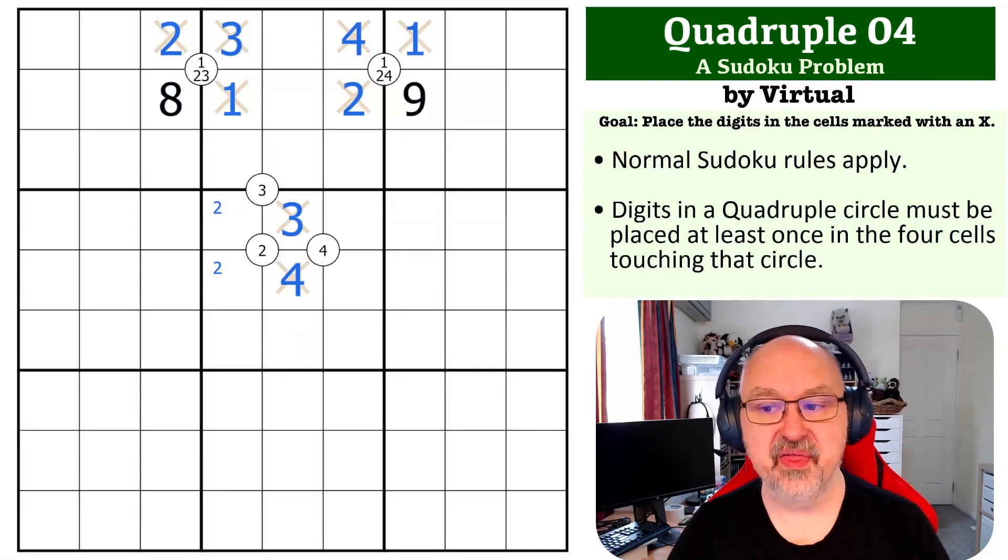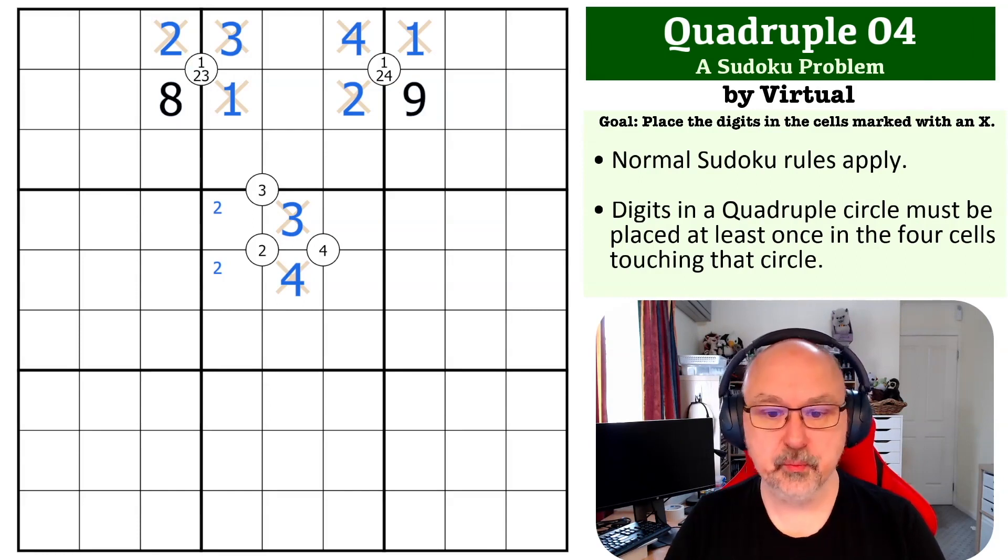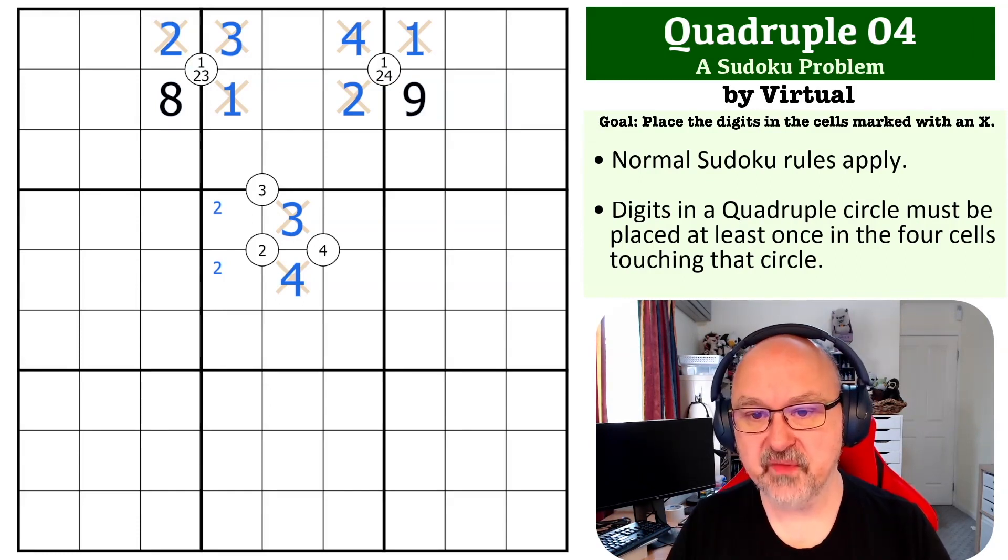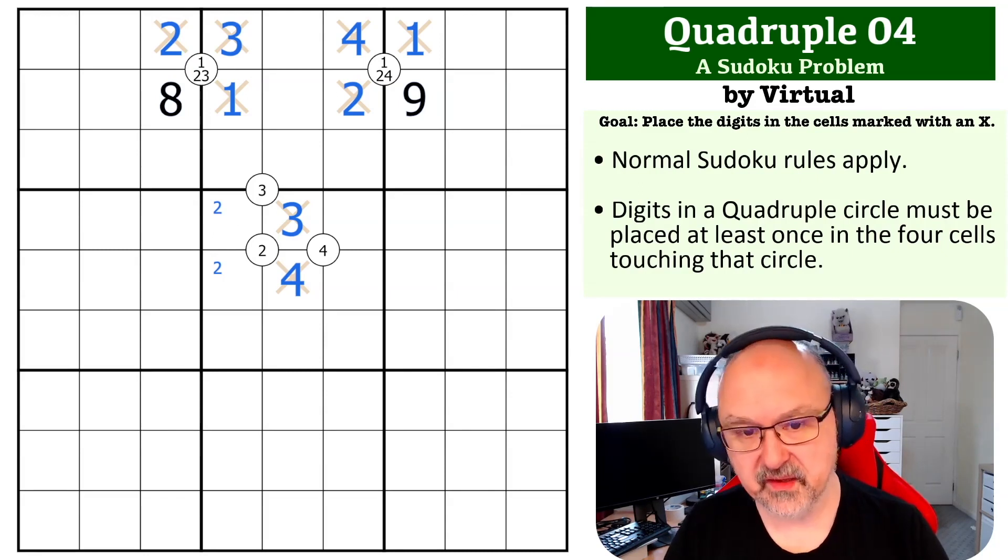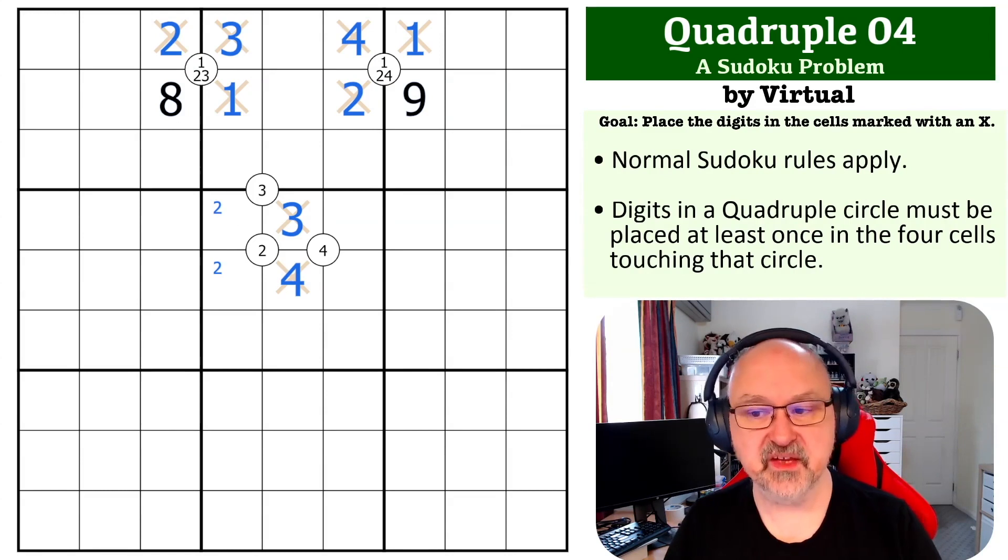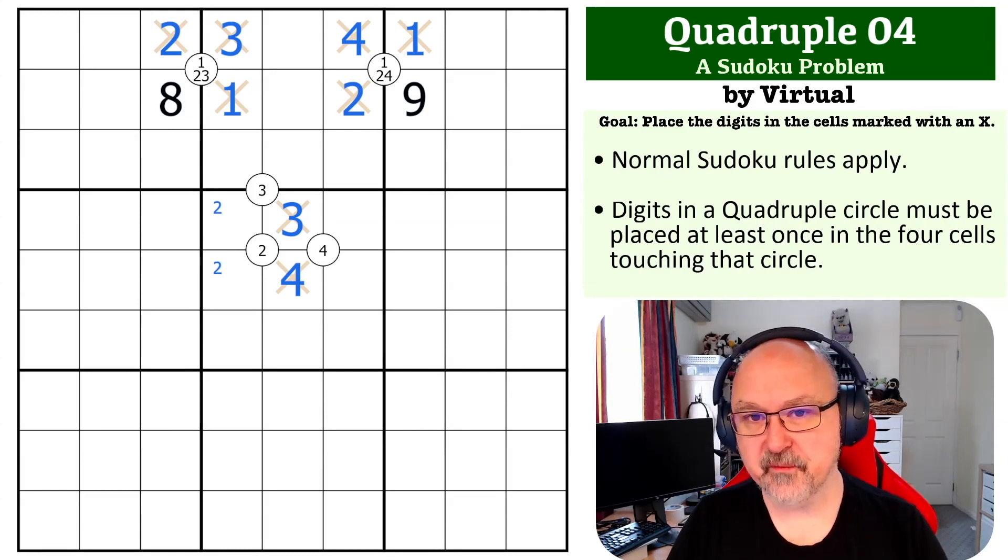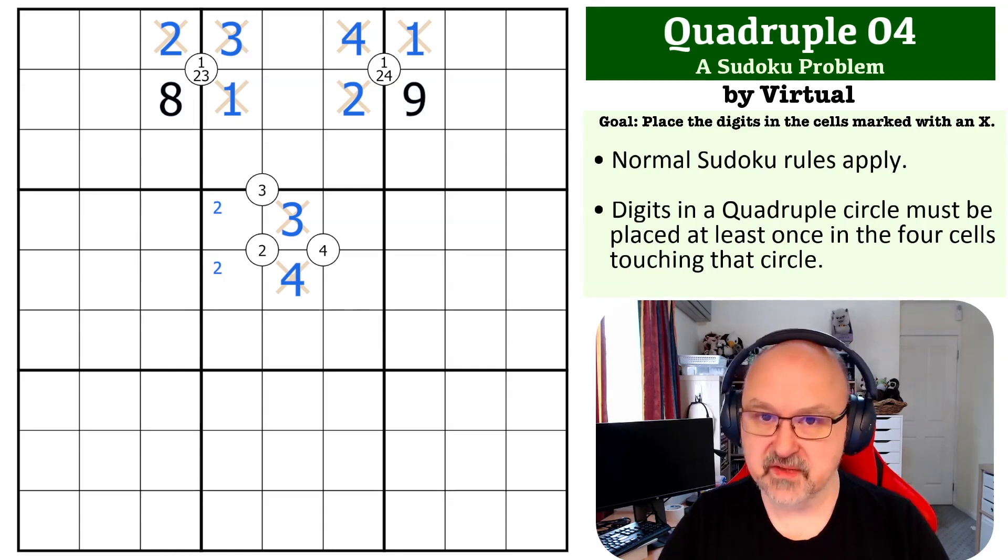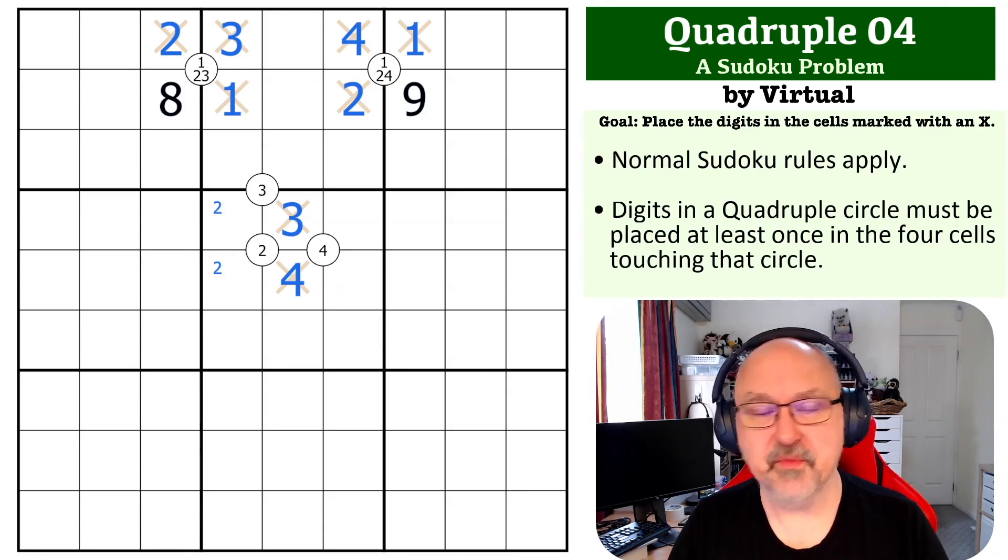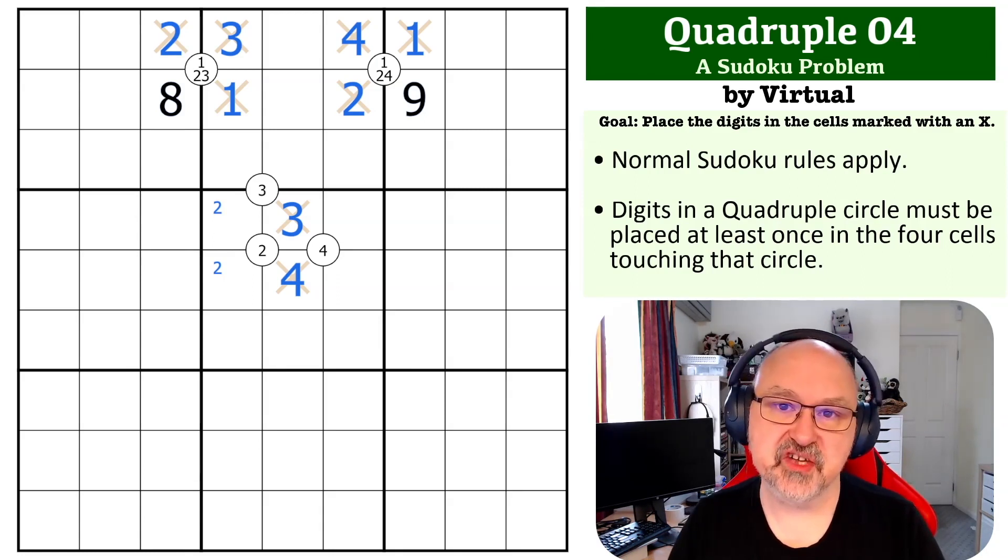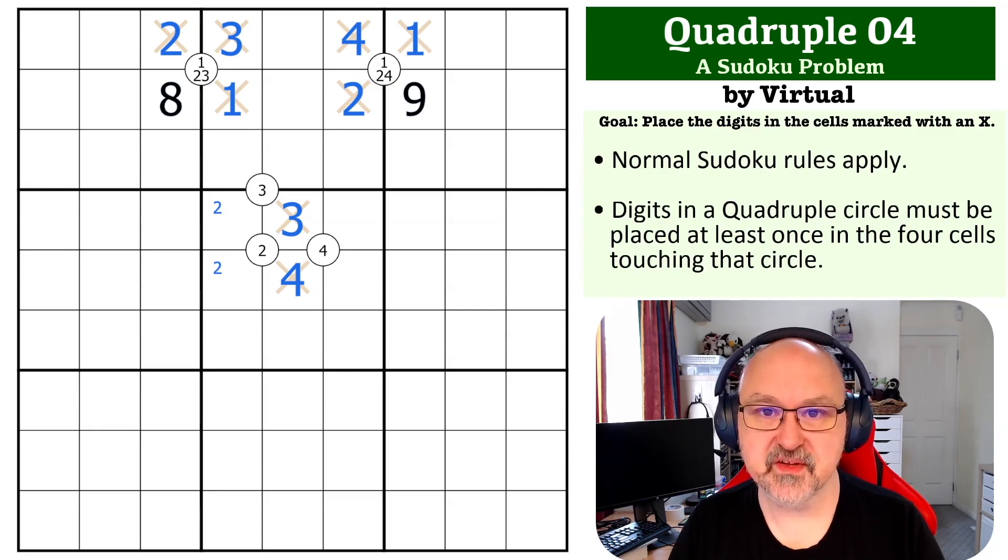I still need to put a one around that quadruple and this becomes a two by Sudoku logic. That finishes this quadruple problem. Some very nice quadruple logic in this one - nothing too advanced but very cool flow. I really like this problem. Thank you Virtual for submitting it. I hope you were able to work your way through that one fairly easily. If not, that's what they're for - helping you learn. Hope you're enjoying the series, the channel, and all the other content here. As always, good luck with your solving.